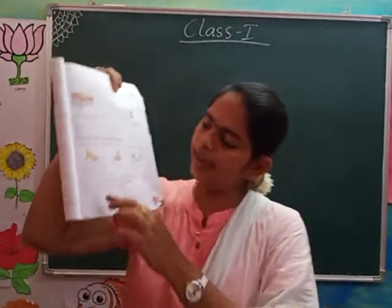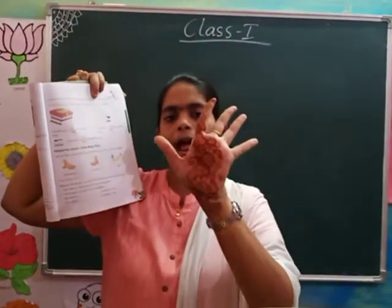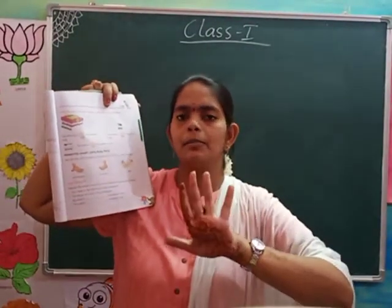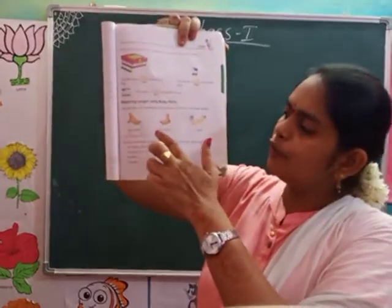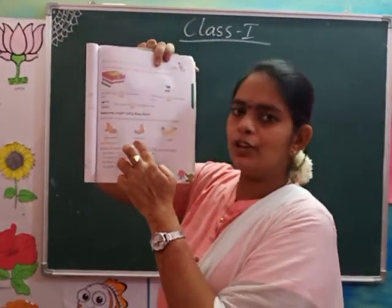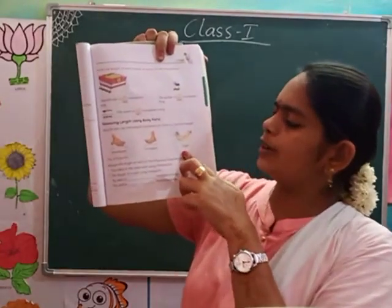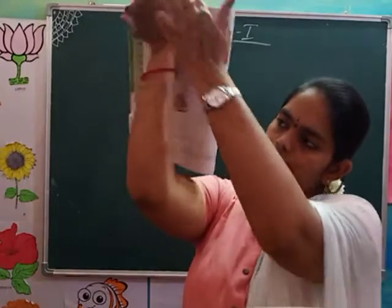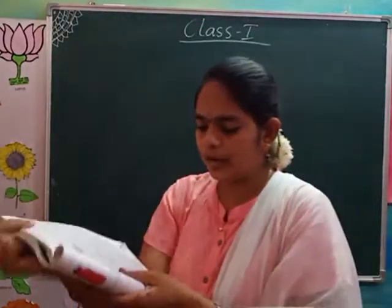Look here — hand span. What is this? Hand span. Hand span is used to measure length. And what is this? Foot span. Foot span is used to measure length. And also, what is this? Cubit. Okay?